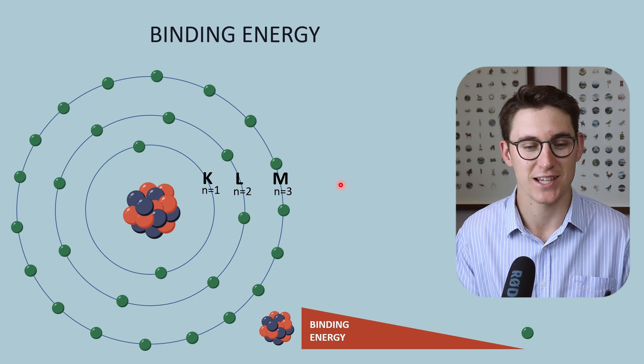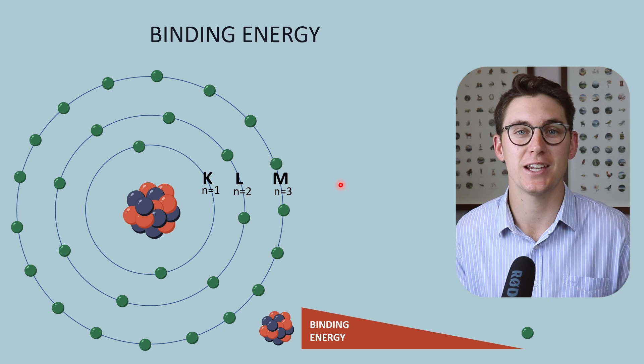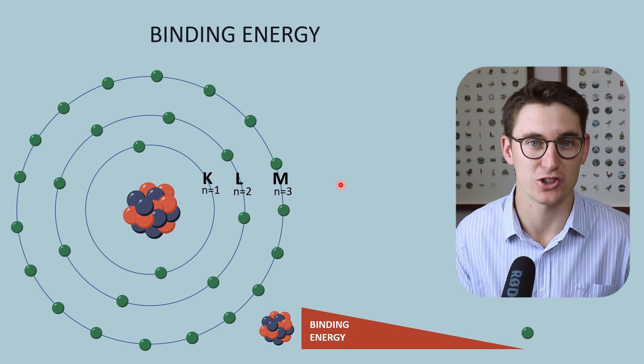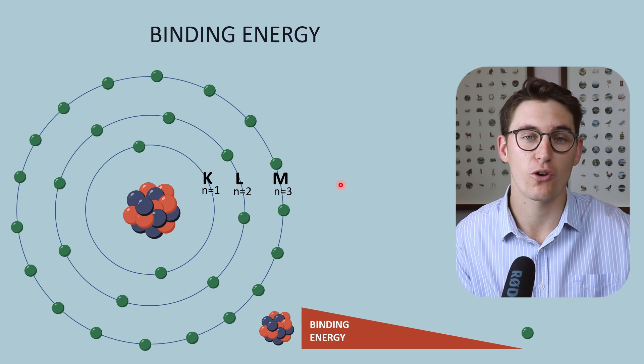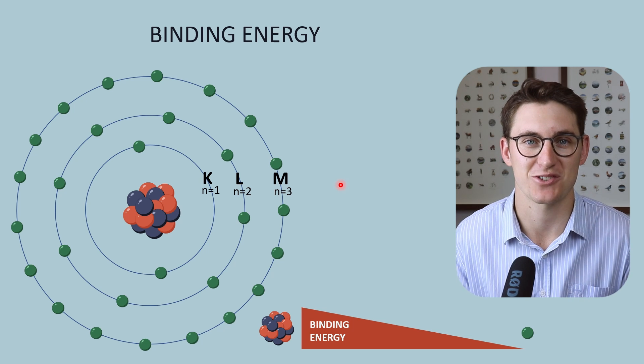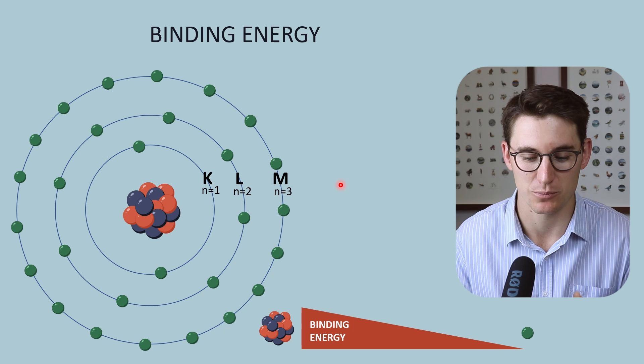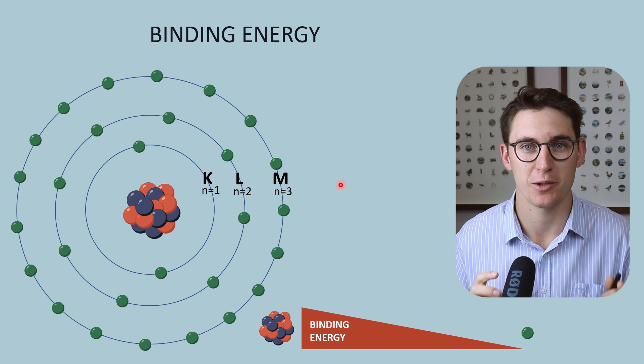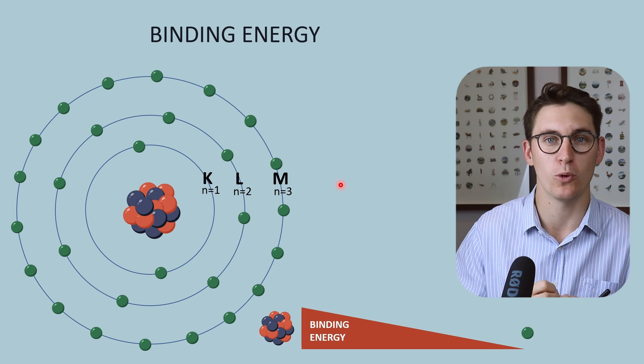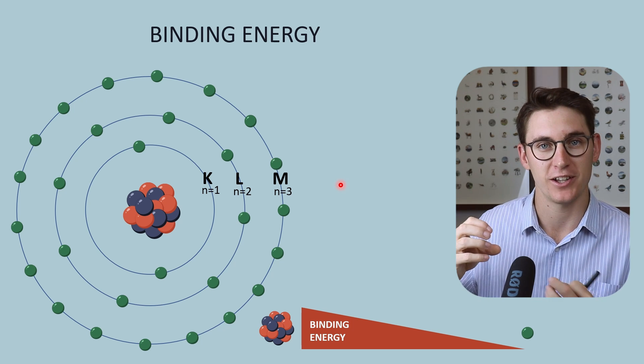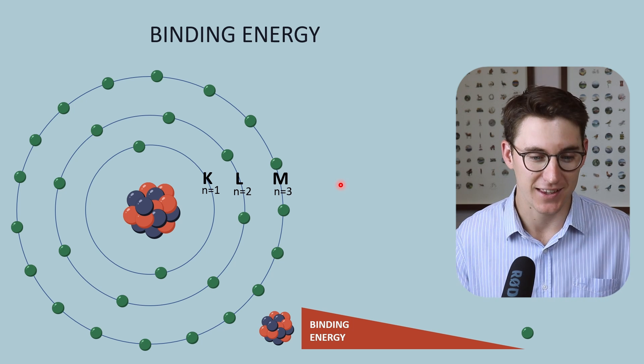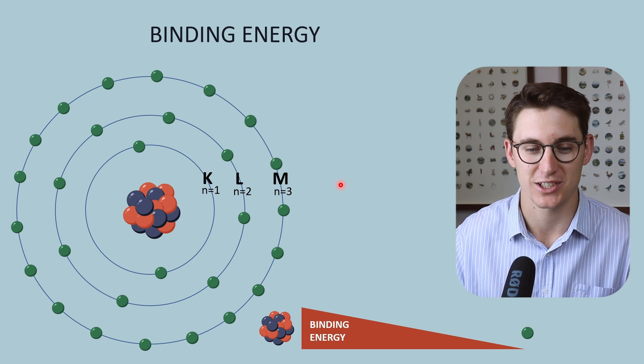You'll see when we look at X-ray physics, this binding energy becomes particularly important because in order to create certain types of X-rays, we need to eject an electron from an atom first in order to create what is known as a characteristic X-ray, which we're going to look at in our X-ray physics module. So this concept of binding energy is incredibly important. Our K-shell binding energies are always going to be more than our L-shell and our L-shell energies will be more than our M-shell respectively. It's the difference in those binding energies that helps us to create characteristic X-rays.